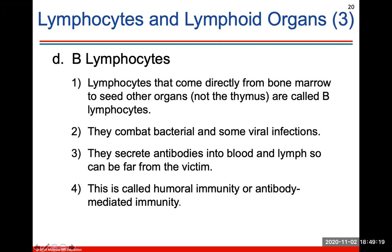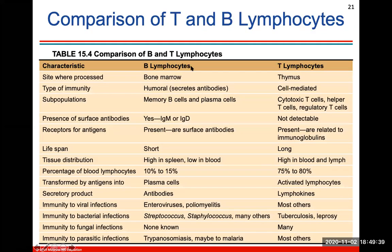B lymphocytes come directly from bone marrow. They combat bacterial and some viral infections. They will secrete antibodies into the blood and lymph, so they can be farther away from the victim, and this is called humoral immunity or antibody-mediated immunity. You should have a general understanding of the differences between B and T lymphocytes, as they are the two main lymphocytes discussed.